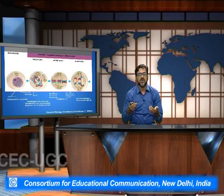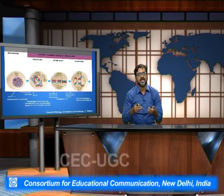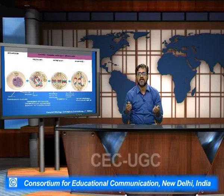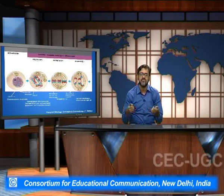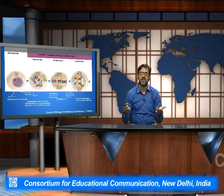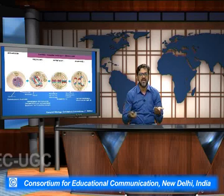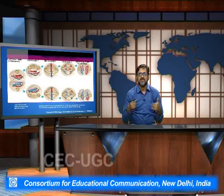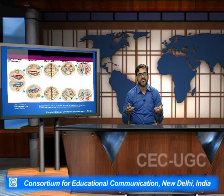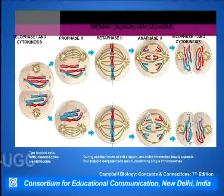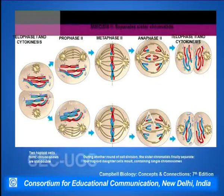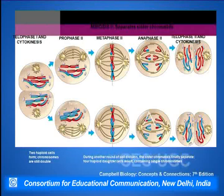Subsequently, each of these homologous chromosomes departs from each other and they start moving towards the opposite pole, beginning the anaphase 1. After anaphase 1, each of the daughter cells has n and n copy number of chromosomes. So we started with 2n and in the first division or meiosis 1 we ended with n and n copy number in each of the daughter cells.